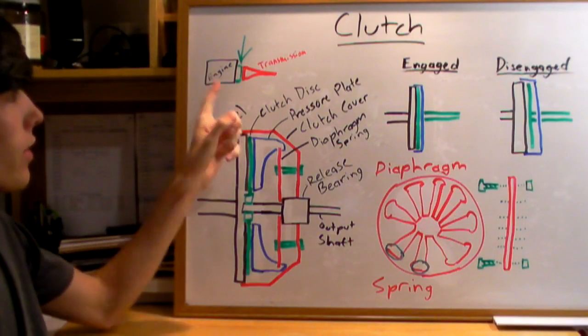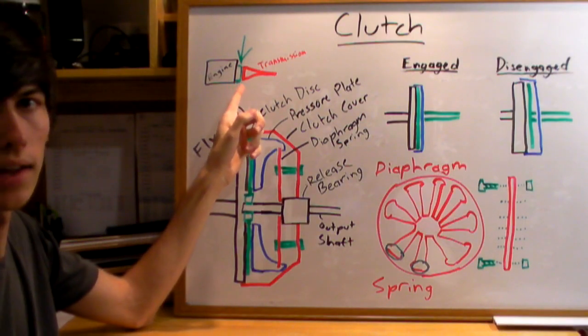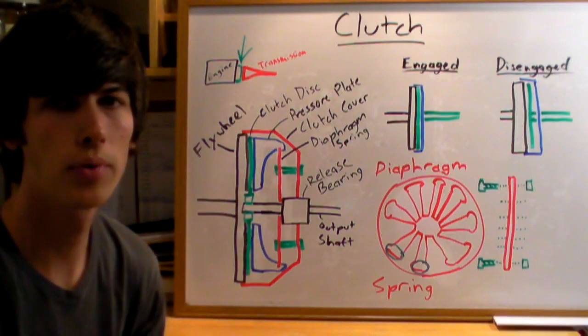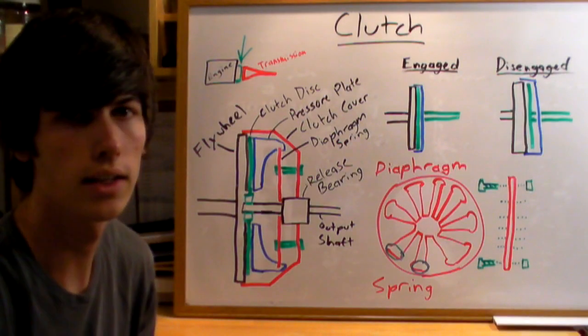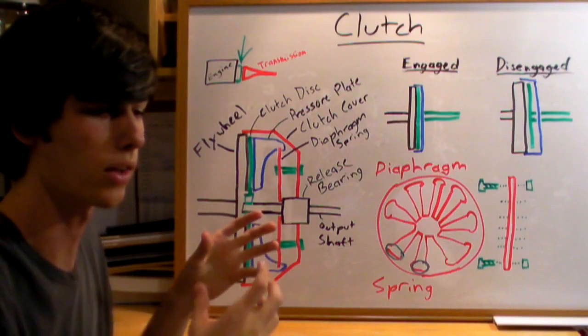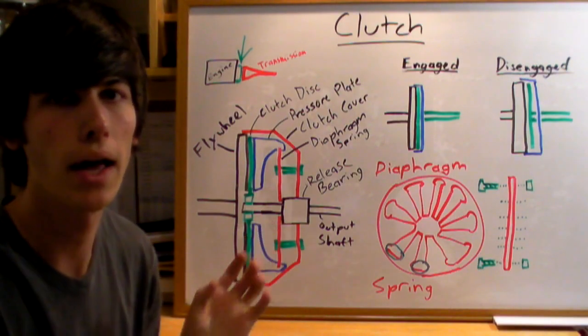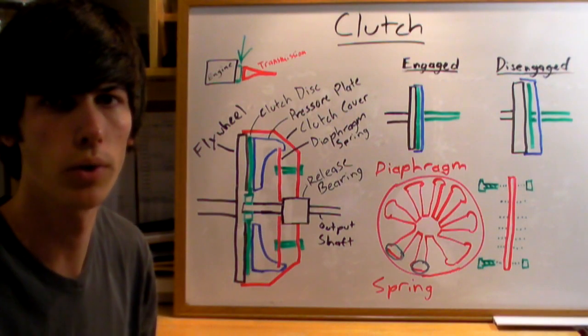A clutch is located between the engine and the transmission. The purpose of a clutch is to act as a linkage between the engine and the transmission, so that you can take the rotating power from the engine, pass it to the transmission, and to the driven wheels.